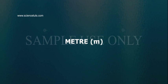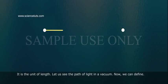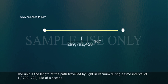Meter (M). It is a unit of length. Let us see the path of light in a vacuum. Now we can define: the unit is the length of the path travelled by light in vacuum during a time interval of 1 by 299,792,458 of a second.